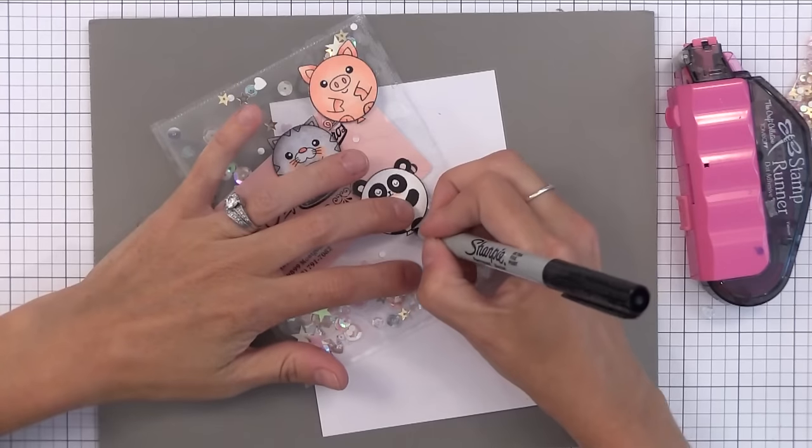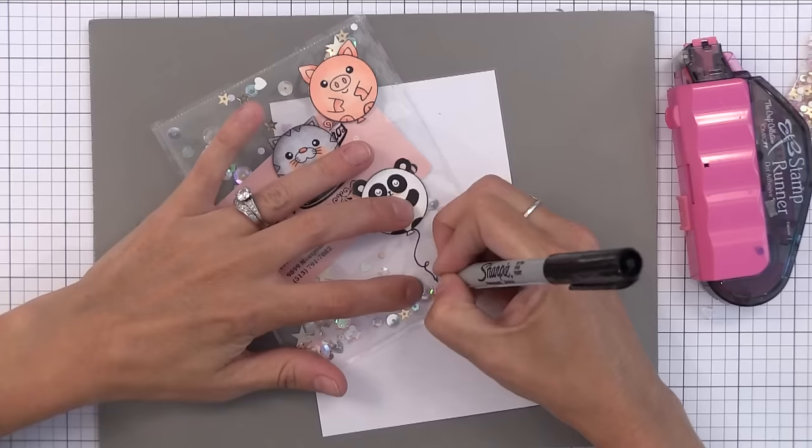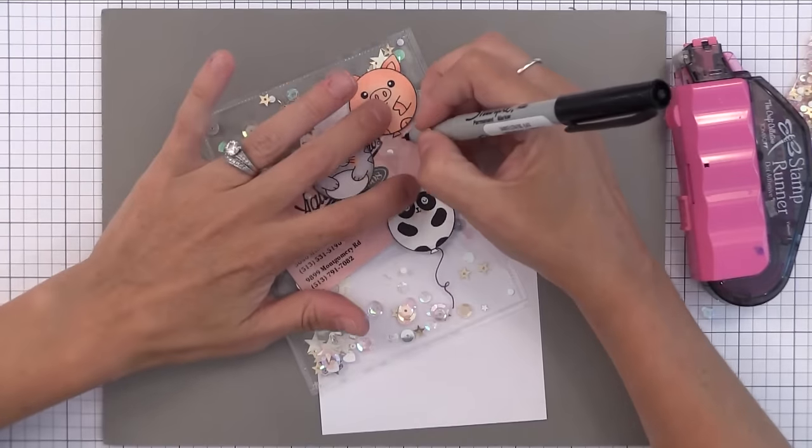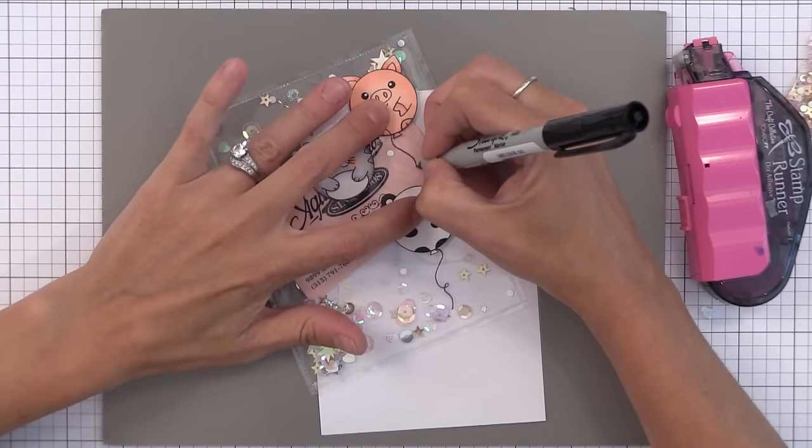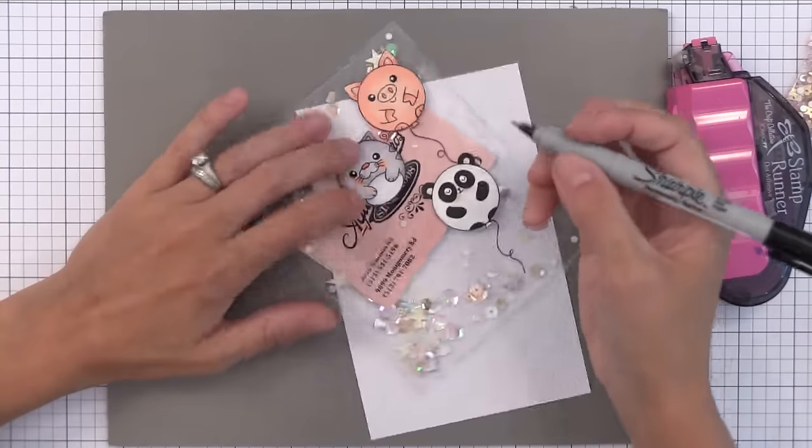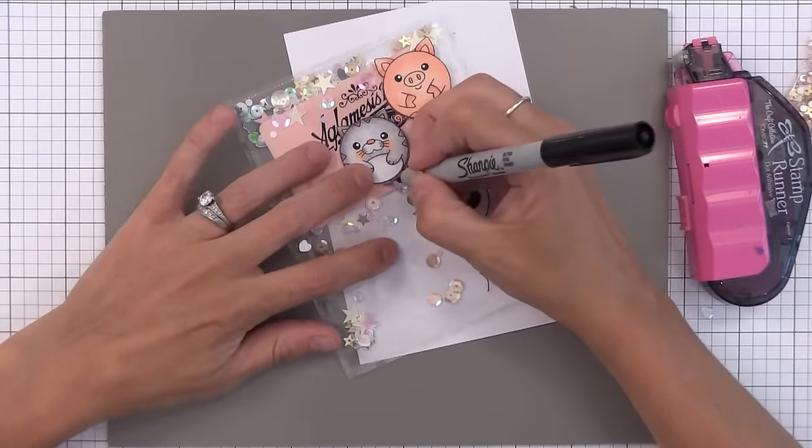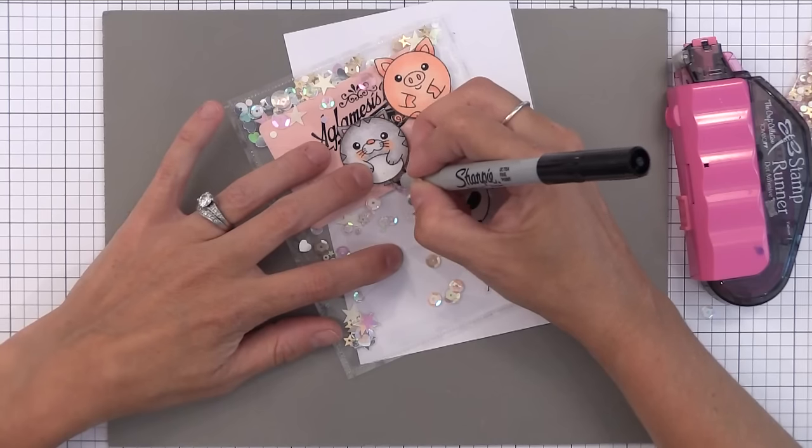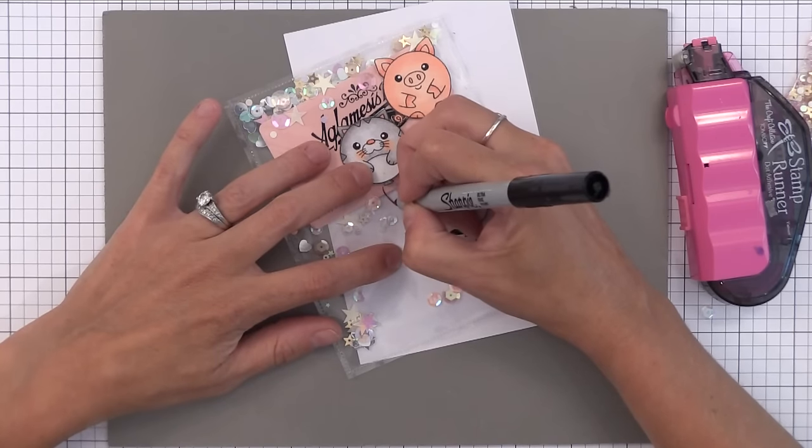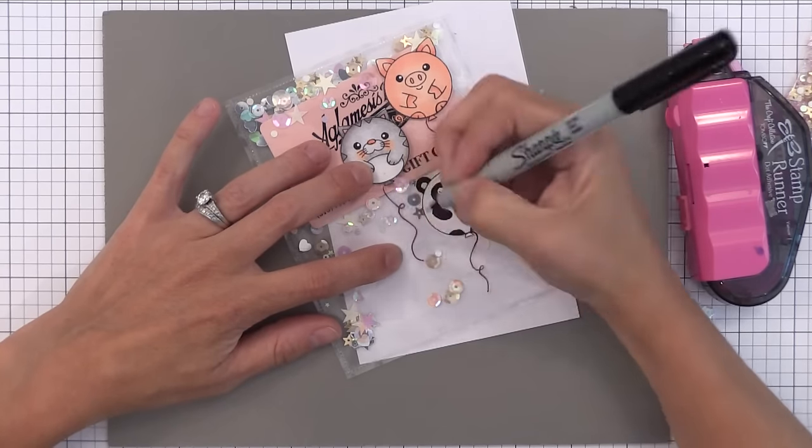So it's at this point that I realized I probably should have decorated the front of this pocket before I filled it in with all those goodies on the inside because I need to add the strings on the balloons. There is a stamp in the stamp set that does the strings and you could have stamped it with black Stazon ink onto the front of this clear pocket. But since I have already filled this I'm just using my black Sharpie to add the strings. It turned out fine, but it definitely would have been easier if I would have done this before adding the sequins and the gift card inside.